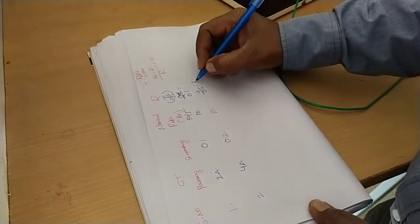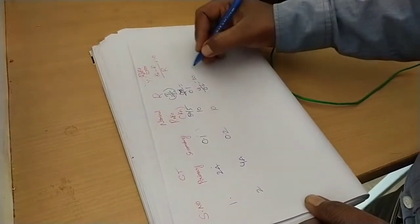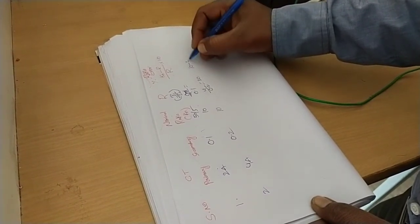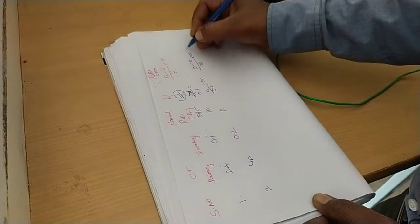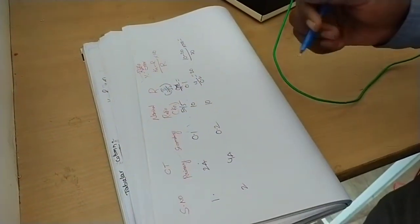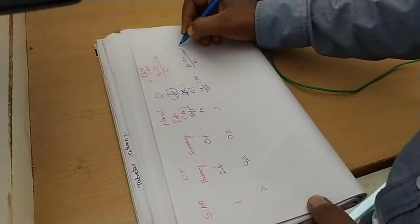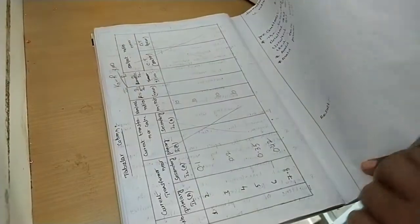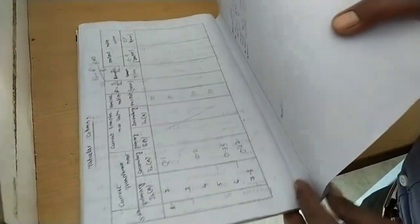For 4 amps primary and 0.2 amps secondary: 4 divided by 0.2 gives a transformation ratio R of 20. The ratio error is KN minus R divided by R into 100: 10 minus 20 divided by 20 into 100 equals minus 50 percent percentage ratio error. Like that, so many values will be calculated for so many readings.